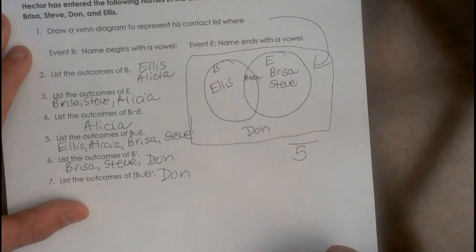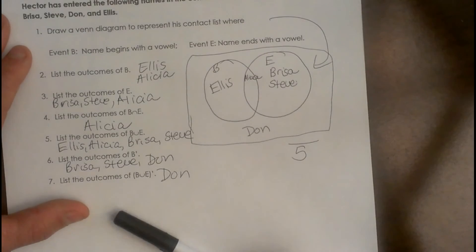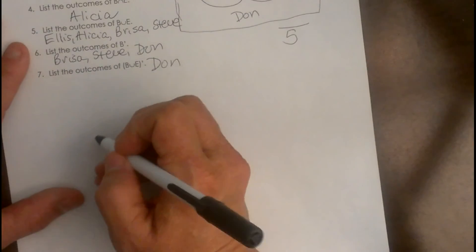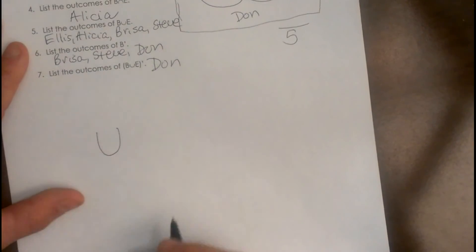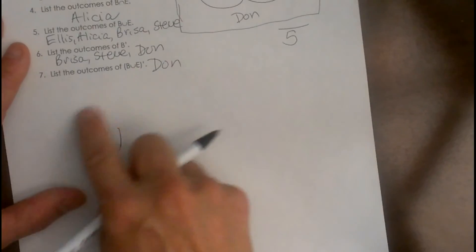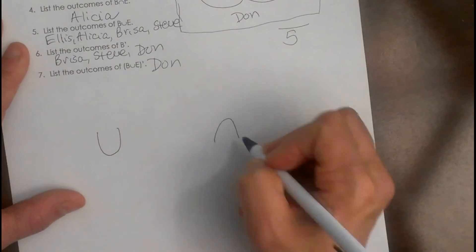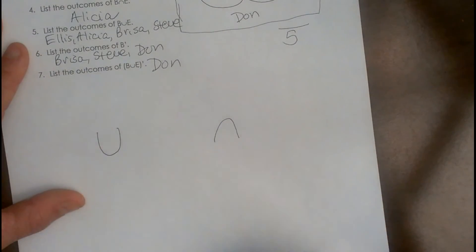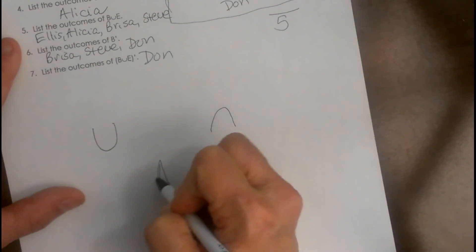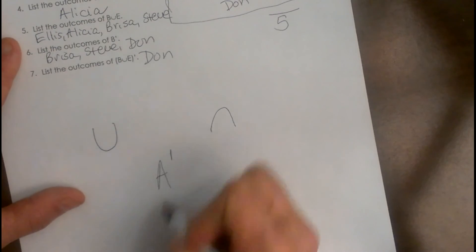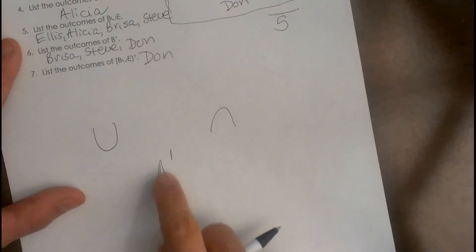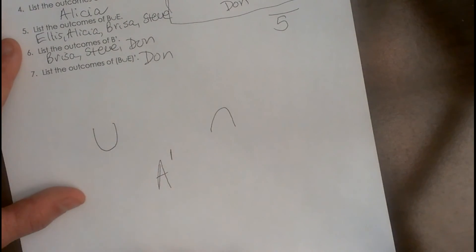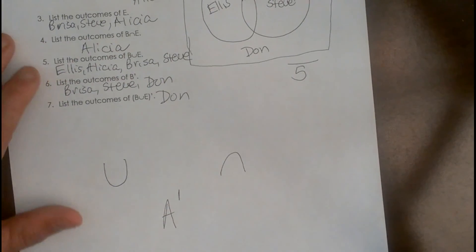So that's how we do our Venn diagrams. We went over the concept of union, which is all groups together, and intersection, which is what they have in common. We also covered how we note NOT in a group, which is with a little prime symbol — if you see a prime, that means NOT in that group. Hope this video is helpful.